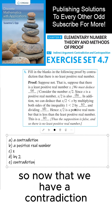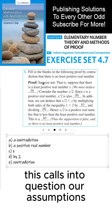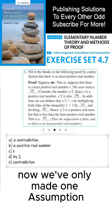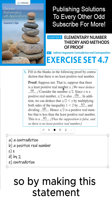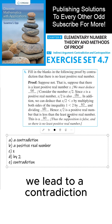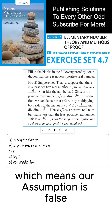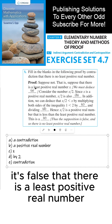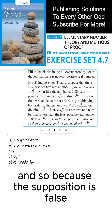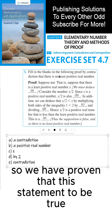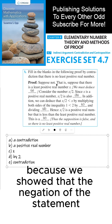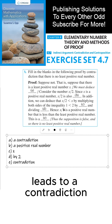Now that we have a contradiction, this calls into question our assumptions. We've only made one assumption — specifically, that there is a least positive real number. By making this assumption, we lead to a contradiction, which means our assumption is false. It's false that there is a least positive real number, and so because the supposition is false, there is no least positive real number. We have proven this statement to be true because we showed that the negation of the statement leads to a contradiction.